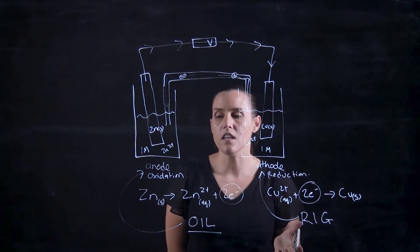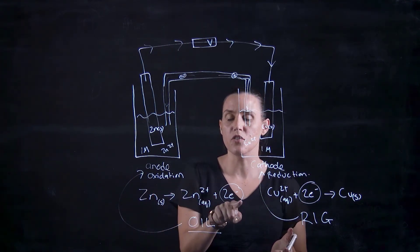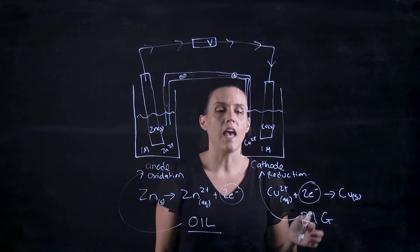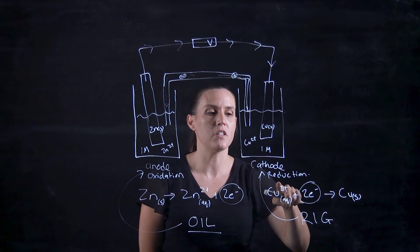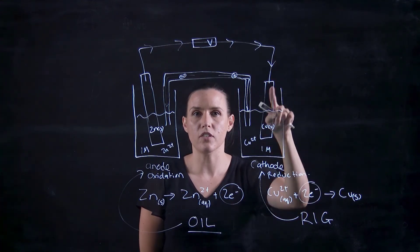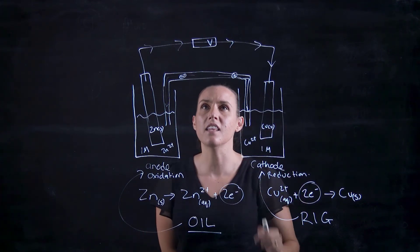Another thing to think about is that if oxidation is losing electrons over time, that would be losing mass, and the cathode, which has the reduction that is gaining electrons, will be gaining mass over time.